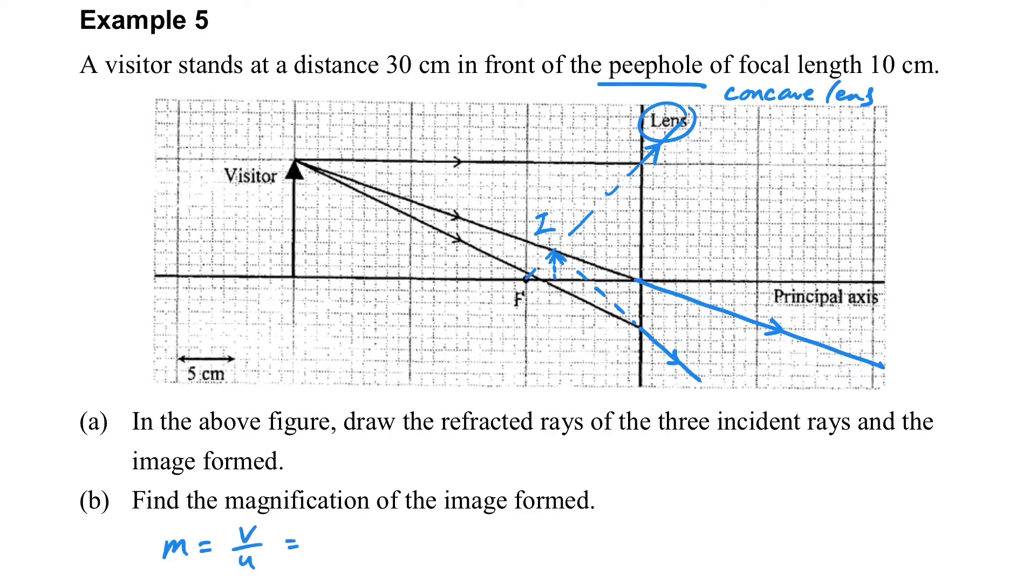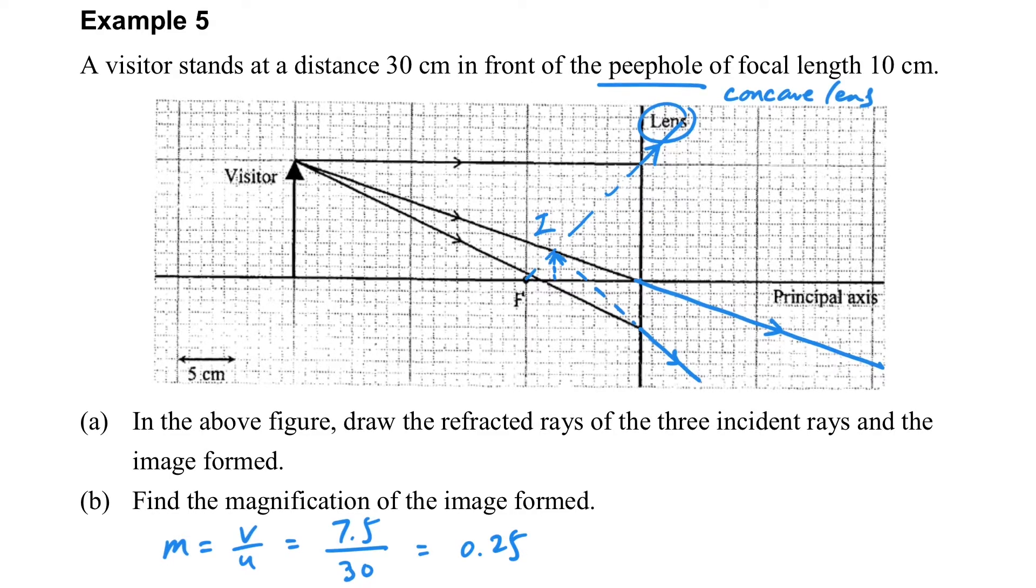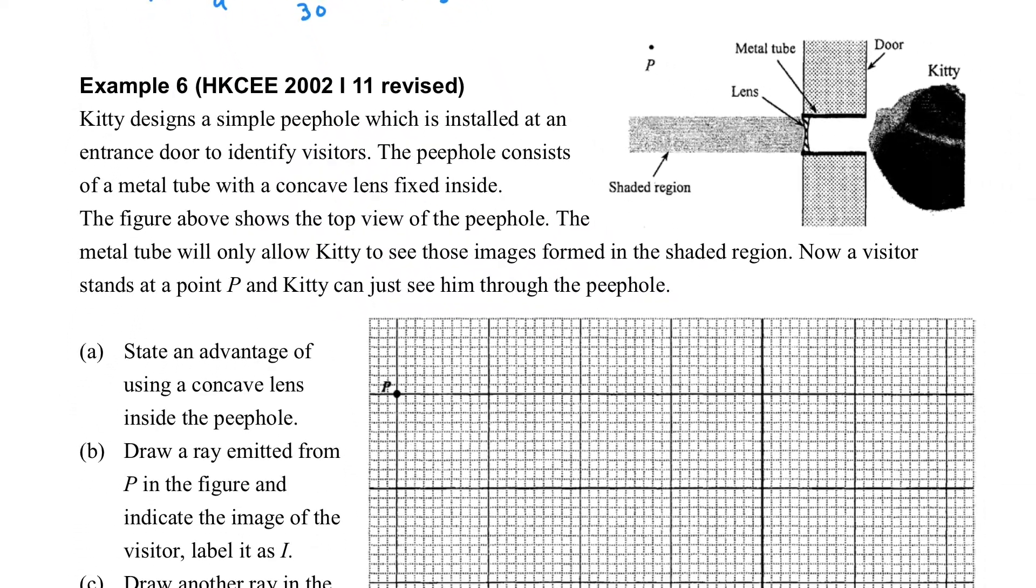Then for the magnification, m equals v over u, which is the image distance over the object distance. So we can find the answer here. Make sure you use the decimal number for the answer.